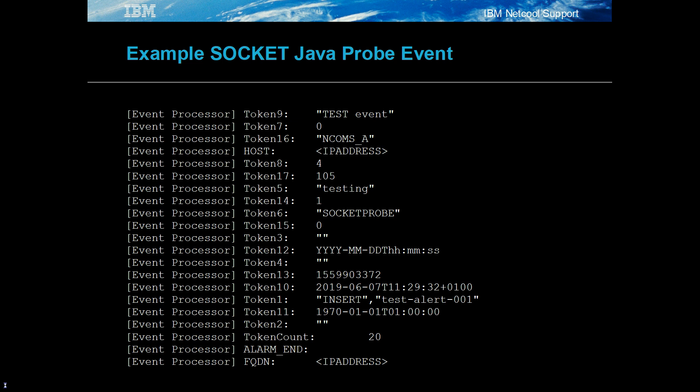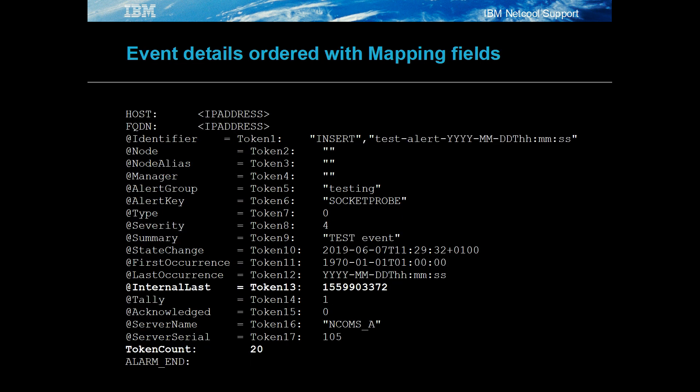Note that the tokens are listed out of order and that the first token includes the insert field. Here we can see the probe's tokens being matched to the gateway's mapping fields. Note that token 1 defines the event uniquely within the context of the insert, update and delete. This is due to the way the probe is reading the events and the way the gateway sends the events, rather than through design.